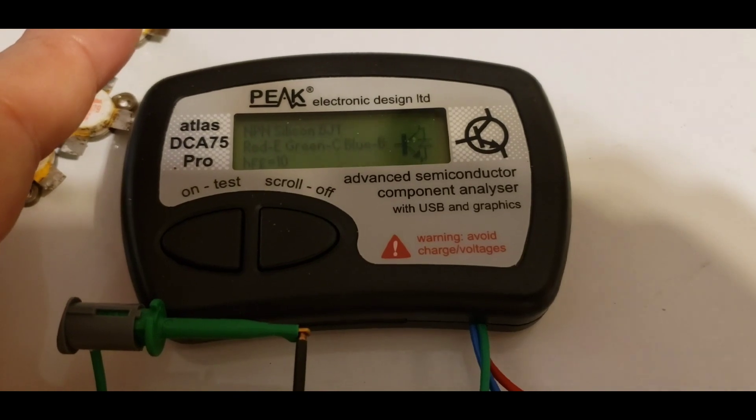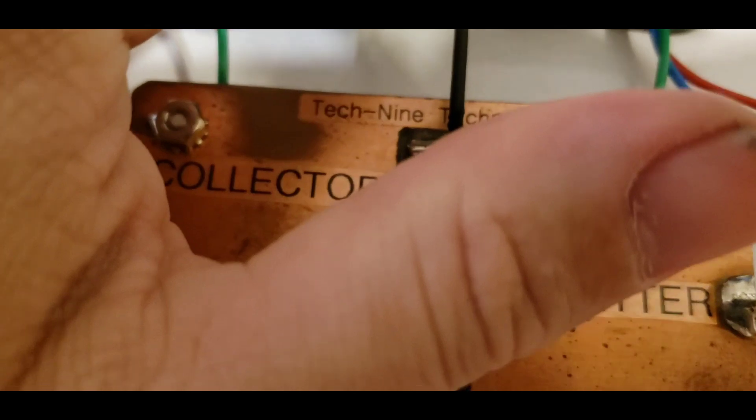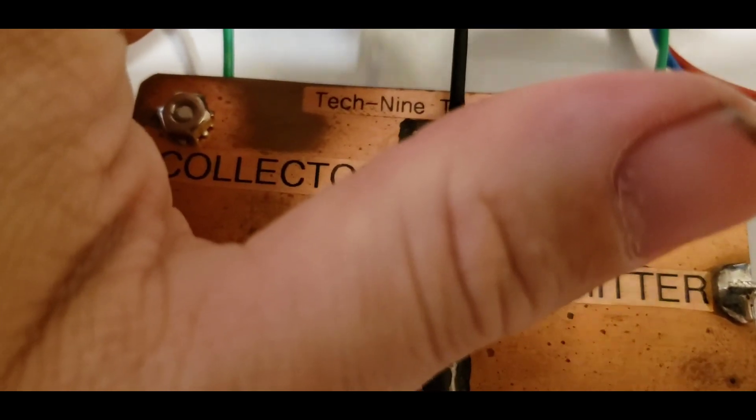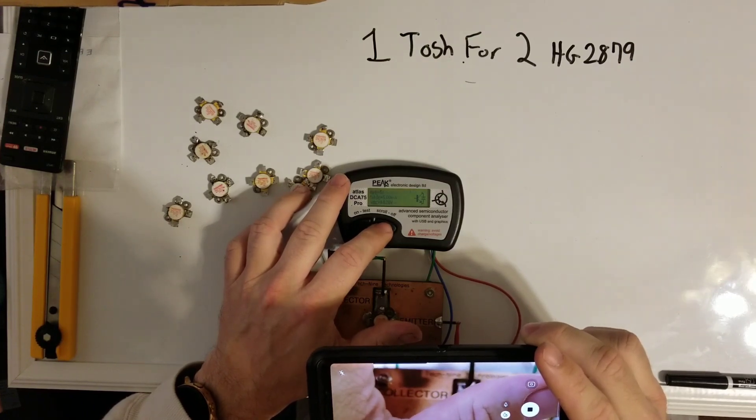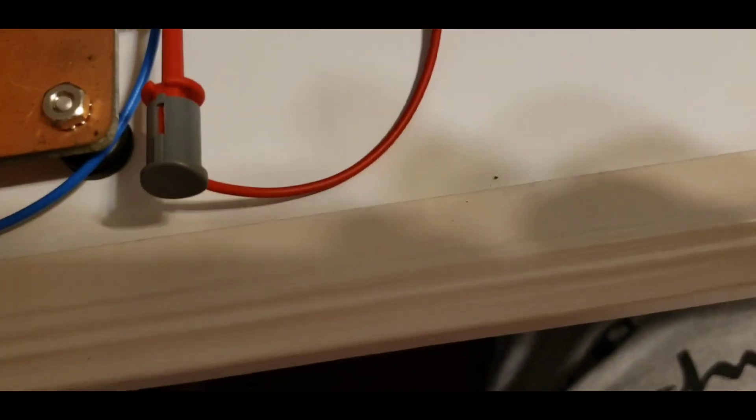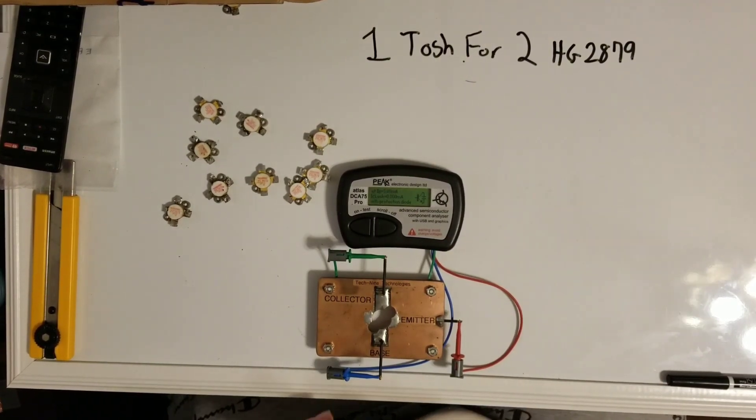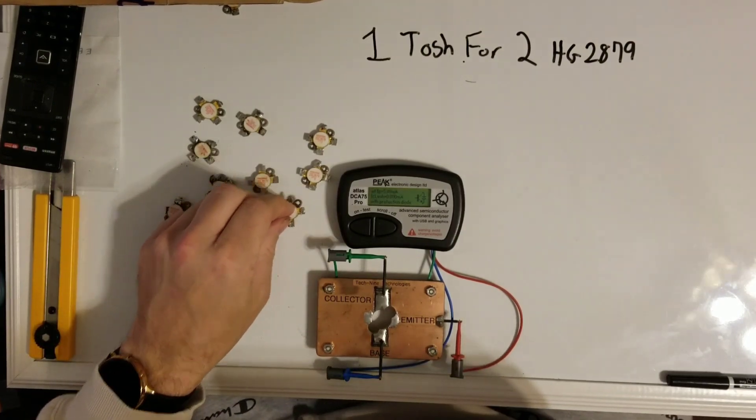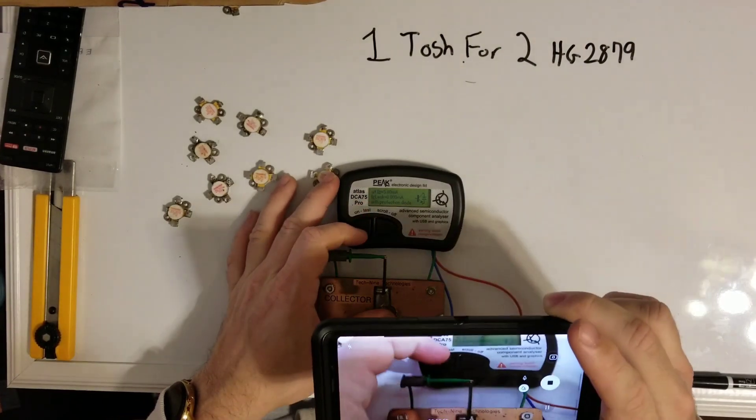All right, let's get the first one here. All right, we got an HFE of 10, kind of low. The HFE is pretty low. All right, no leakage. The HFE is pretty low. I'll work out something else with that. I'll usually do like two Toshibas for two, basically trade one for one.